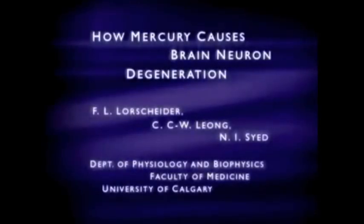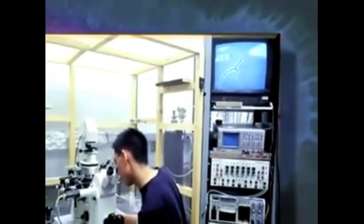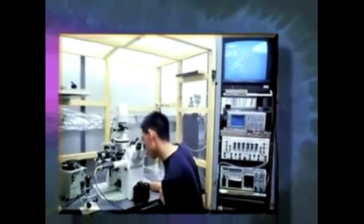How mercury causes brain neuron degeneration. Mercury has long been known to be a potent neurotoxic substance, whether it is inhaled or consumed in the diet as a food contaminant. Over the past 15 years, medical research laboratories have established that dental amalgam tooth fillings are a major contributor to mercury body burden.